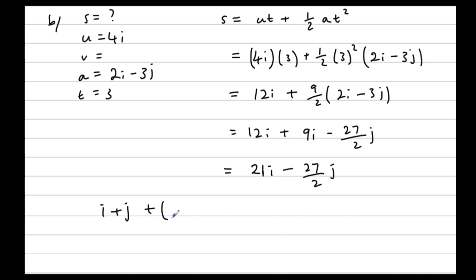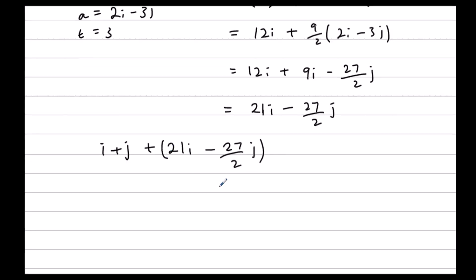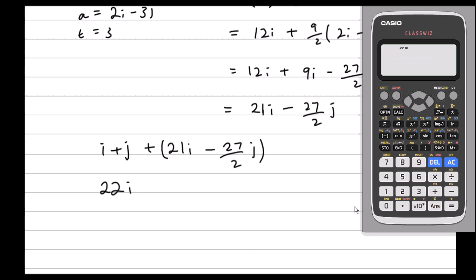So we need to add this on. So it's gone 21 to the right. So it's now at 22i. And it's gone down by 13 and a half. So 1 minus 27 over 2. You can always use the calculator. It's negative 25 over 2.